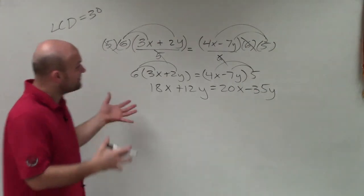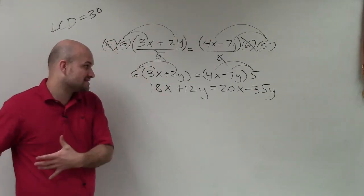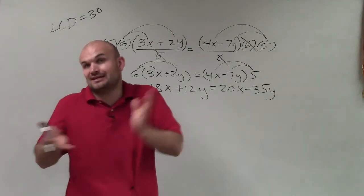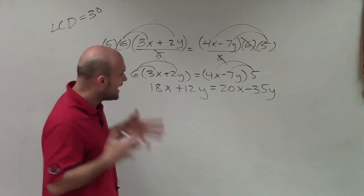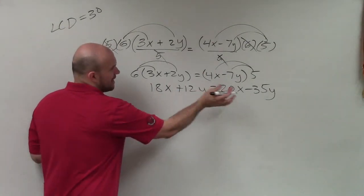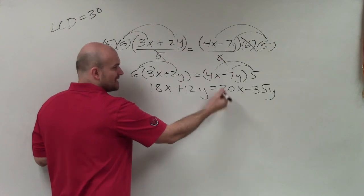Now you can see I don't have the fractions. Now all I need to do is get my variables to the same side. I can get them to the left or the right, it doesn't matter. I usually like to keep a positive variable. So therefore, I'm going to subtract 18x on both sides. Therefore, this will be a positive 2x.